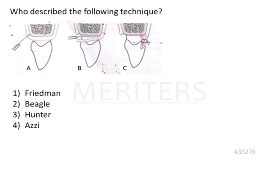Let us look at the detail of the figure or illustration shown here. If you see in A, you will appreciate that this particular area is devoid of soft tissue. That means the interdental papilla is missing.